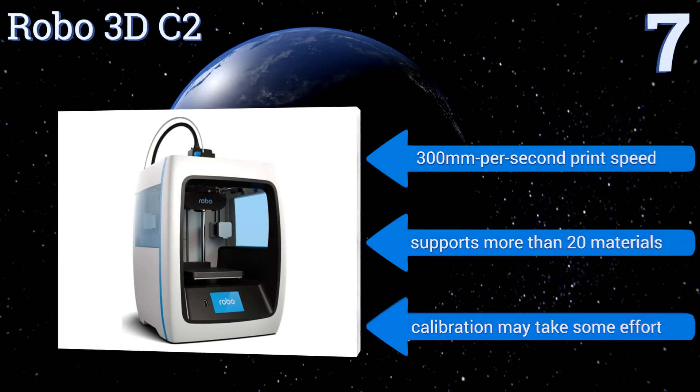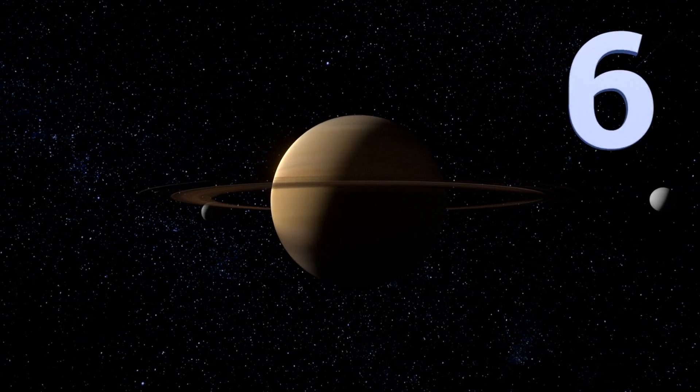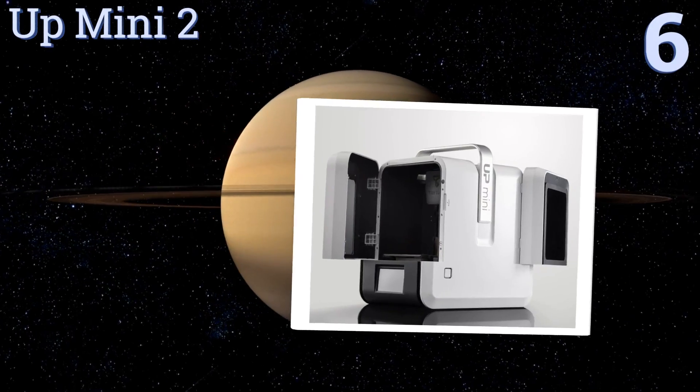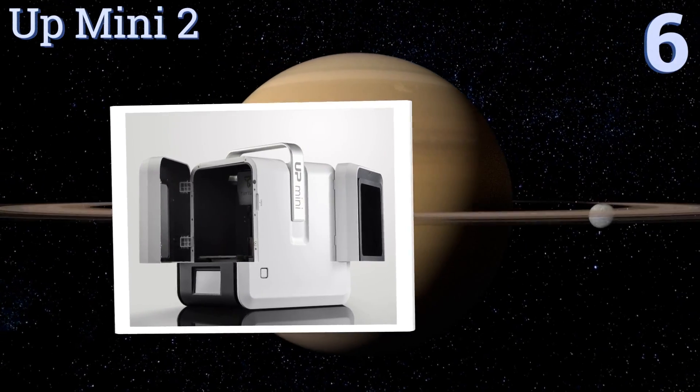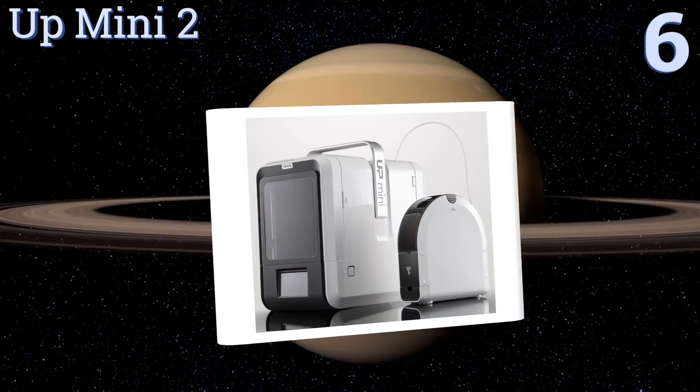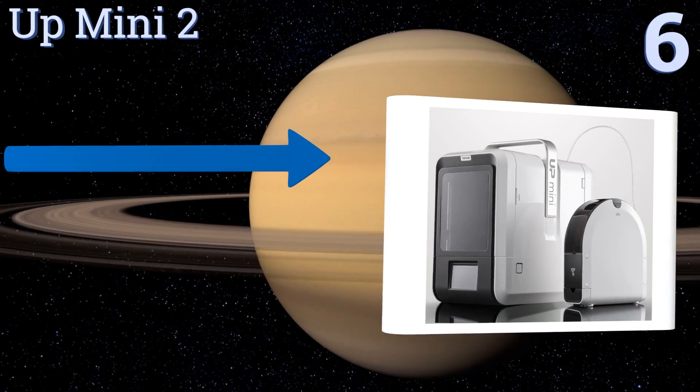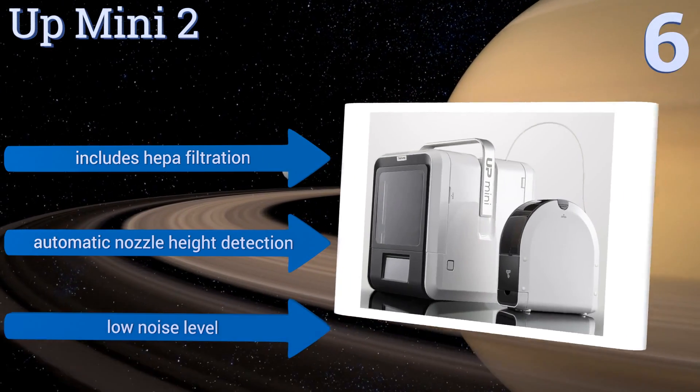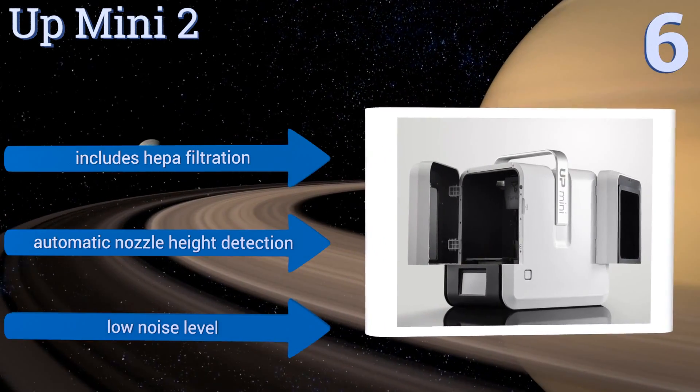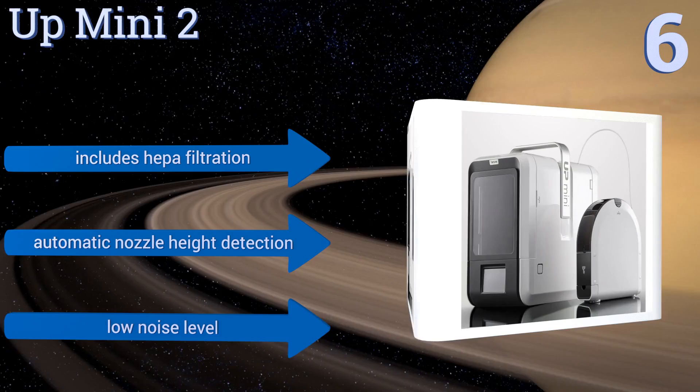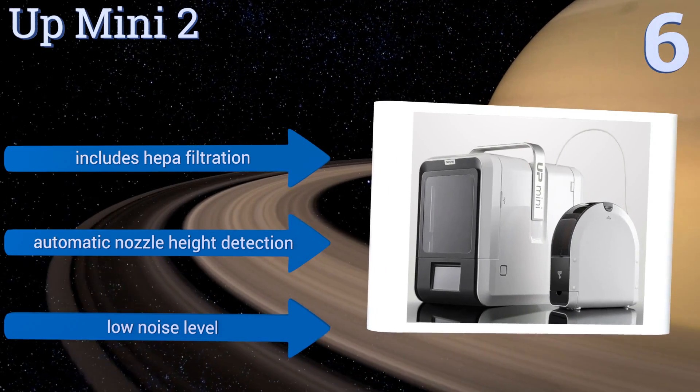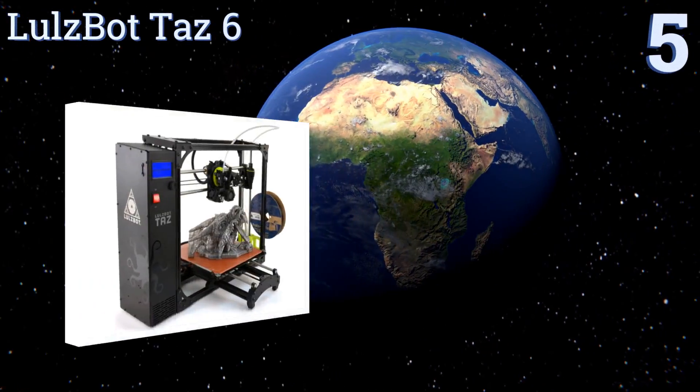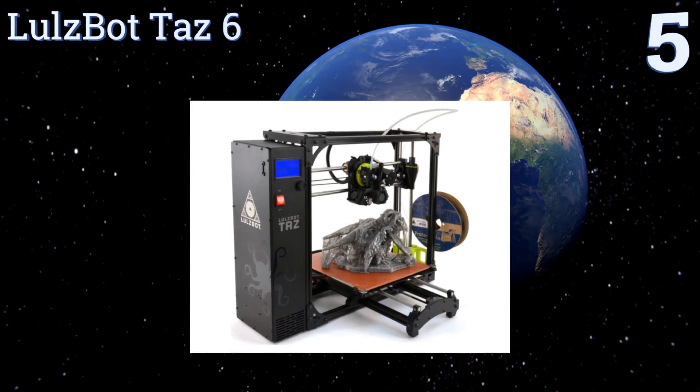Moving up our list to number six, Tiertime's Up Mini 2 bucks the open source trend with a proprietary system that's sleek, compact, and portable for a very reasonable price. Its plug-and-play usability, Wi-Fi connectivity, and user-friendly touchscreen interface make it an excellent choice for novice users. It includes HEPA filtration, automatic nozzle height detection, and a low noise level.